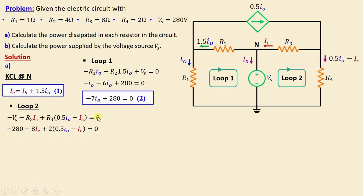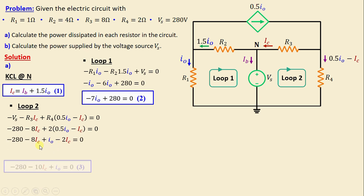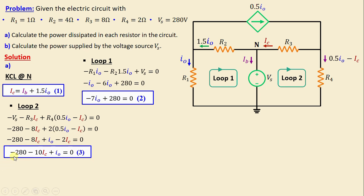Replacing the resistors and voltage with their numerical values, we obtain: −280 − 8·IC + 2·(0.5·IO − IC) = 0. Continuing to simplify, we obtain: −280 − 10·IC + IO = 0. I will call this Equation 3.